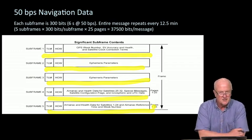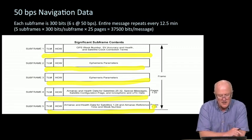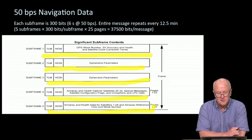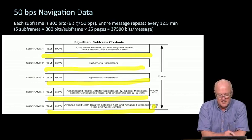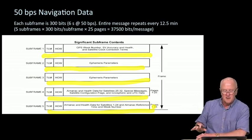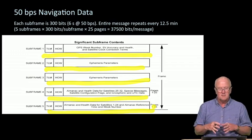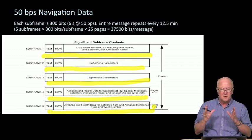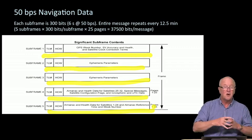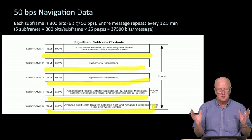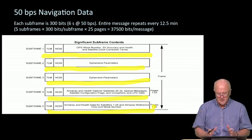Subframe one contains basic bookkeeping information: GPS week number, what satellite are you looking at, what's its accuracy, what's its health. Subframes two and three contain that ephemeris information that we highlighted. This is the information that tells you where the satellite is. Subframes four and five are almanacs. By almanacs, we mean this data includes information about the satellite you're viewing, but it also includes information about all the other satellites available to a GPS user.